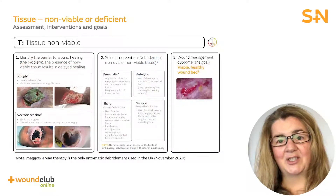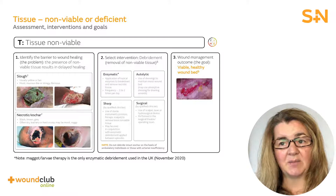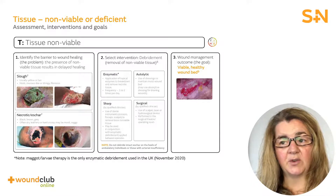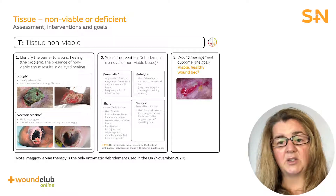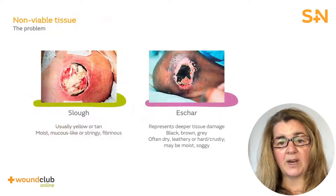For this section we will refer to the T in TIME — tissue non-viable or deficient. The goal is to assess for and identify the type of non-viable tissue and establish a plan and goals for management. There are typically two primary types of non-viable tissue found in chronic wounds: slough or eschar. Slough is usually yellow or tan and may be moist, mucus-like, or stringy and fibrous. Slough is often a mixture of fibrin, degraded collagen, or devitalised tissue.